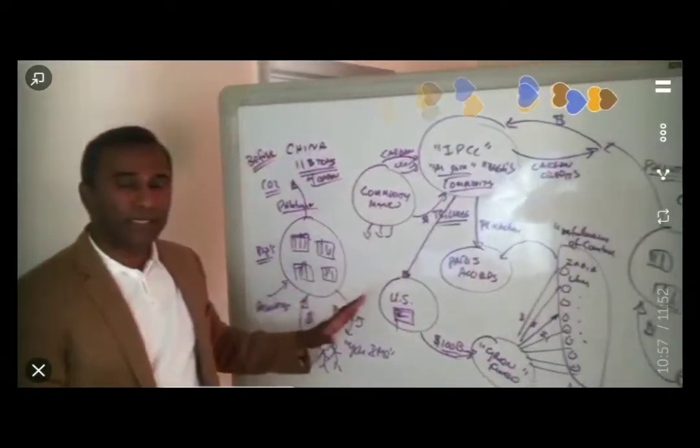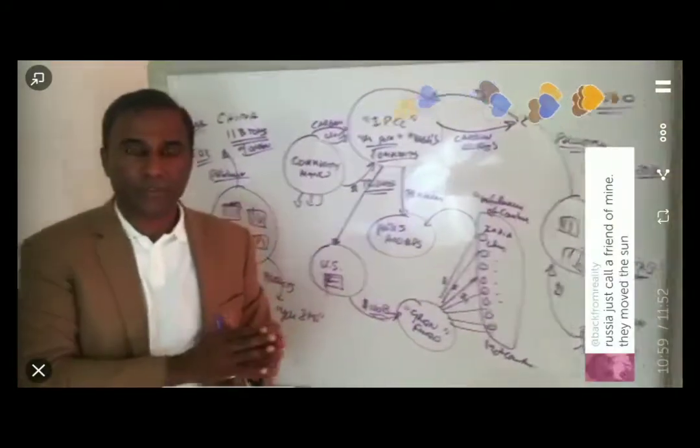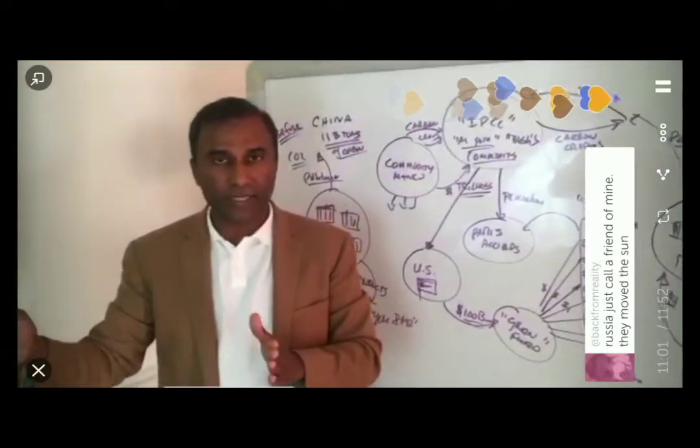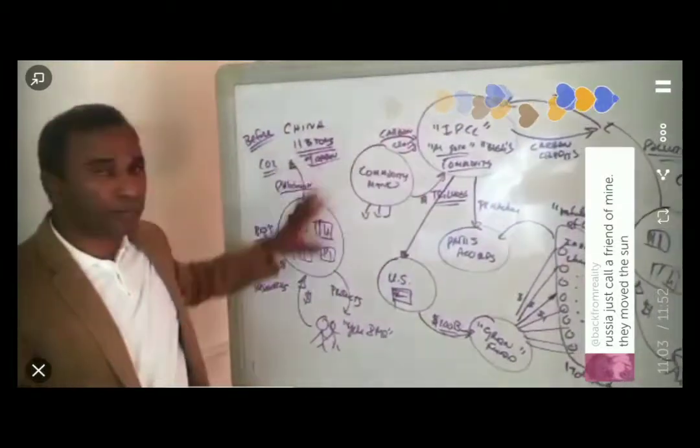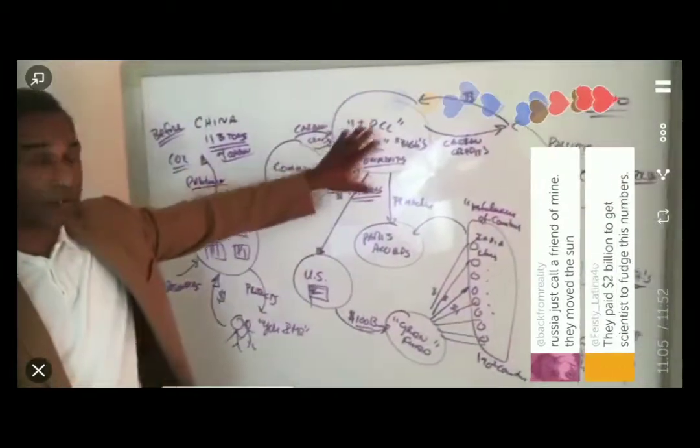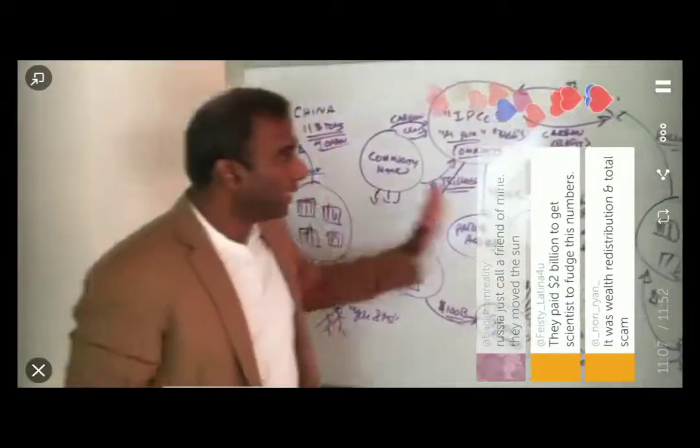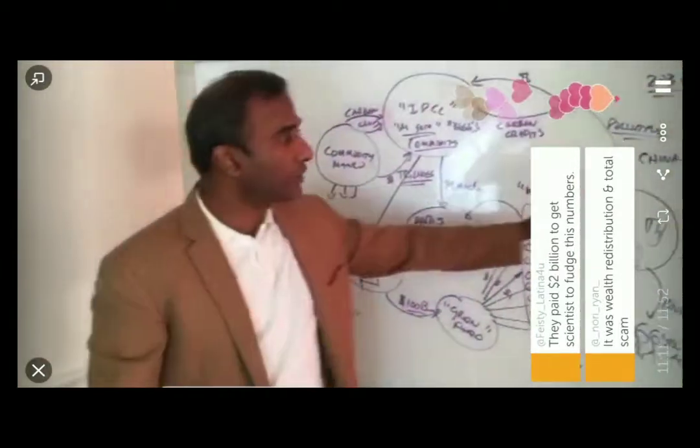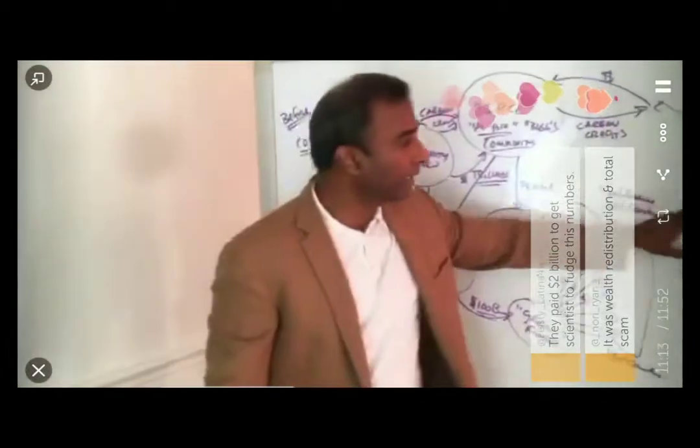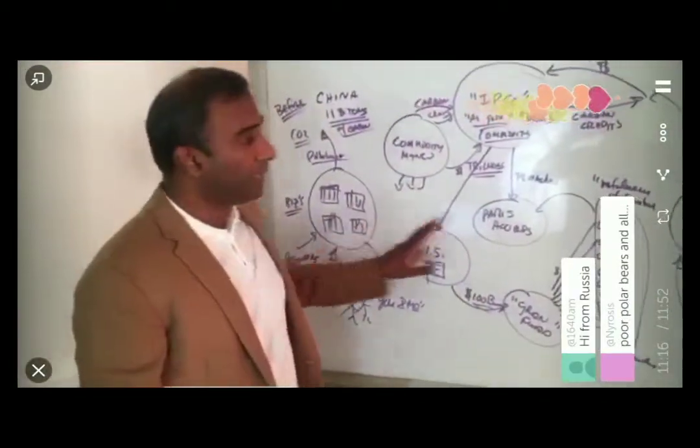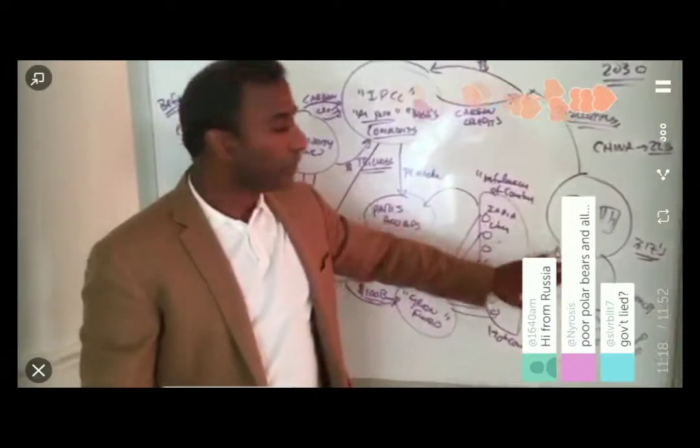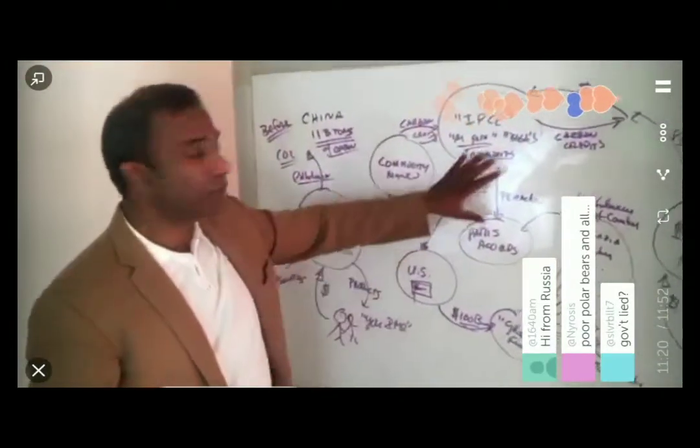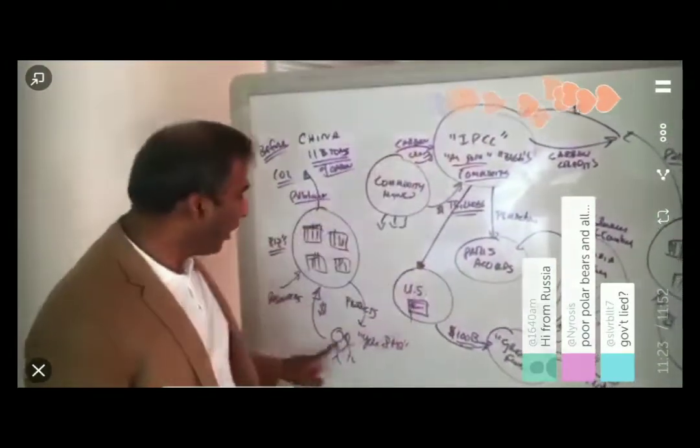But the bottom line is, there is no conclusive evidence that the temperature has gone up, if you look at the facts. This entire process really profits this group. The reality is China is going to continue to pollute 2x, 200% more. India also gets to pollute from 2 billion to 4 billion. In fact, we're going to drop our carbon emissions from 5 billion to 4 billion. So this entire process is really a big racket.